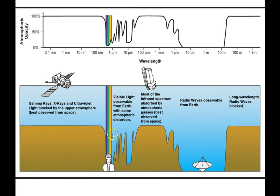But when you get to the visible spectrum, you can see there's a dramatic dip in opacity. The atmosphere is mostly transparent to these wavelengths, what we call visible light. And then there are some peaks and troughs out in the infrared part of the spectrum. The long infrared waves are mostly blocked by the atmosphere, so if you're interested in studying emissions at these wavelengths from stars or planets, you need a telescope out in space.